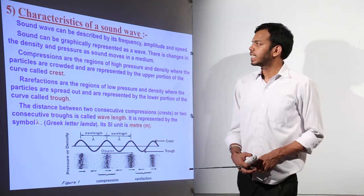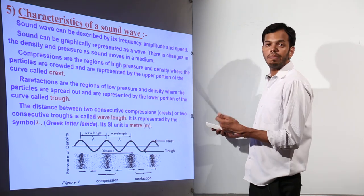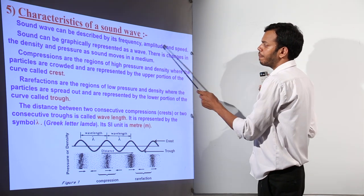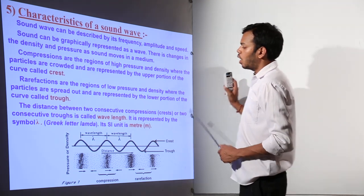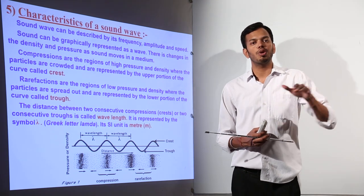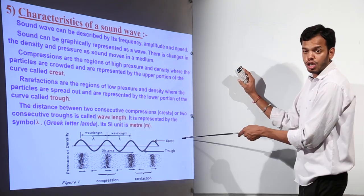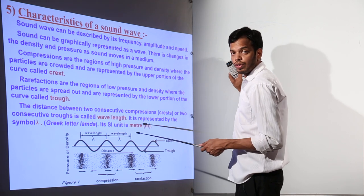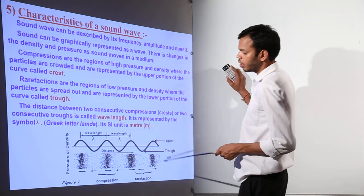Now, what are the characteristics of sound waves? Sound waves can be described by frequency, amplitude, and speed — these are the three main characteristics. In transverse waves the direction of propagation and vibration of particles are perpendicular, whereas in longitudinal waves they are in the same direction, and compressions and rarefactions vibrate along that same direction.